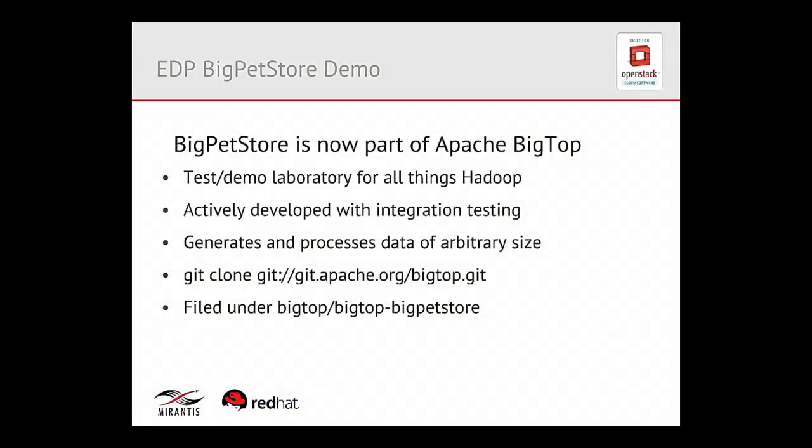The demo that we have on video is called Big Pet Store. Some of you from database design days might remember Pet Store as a popular thing to do — tracking purchases and transactions of pet supplies. In the Apache project now, there is this demo, Big Pet Store, meant to be essentially a test laboratory for all things Hadoop. You can play with it; it tests the Hadoop ecosystem, generates data, cleans data, and processes data. It's being actively developed with integration testing, so it's a nice reliable platform. The git address is up there — you can clone it, build it, and run it.